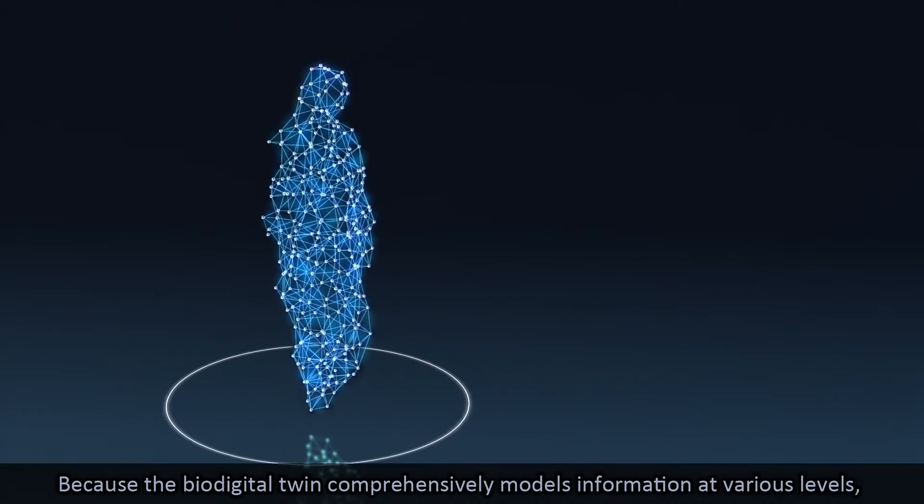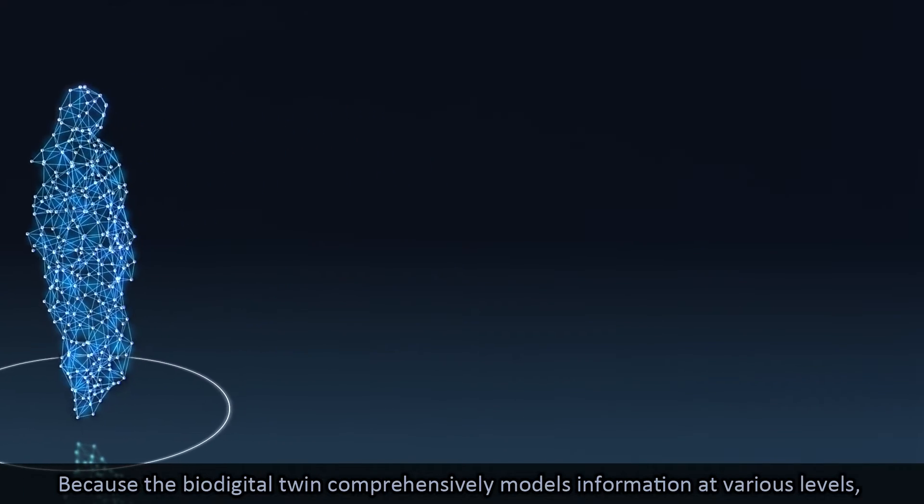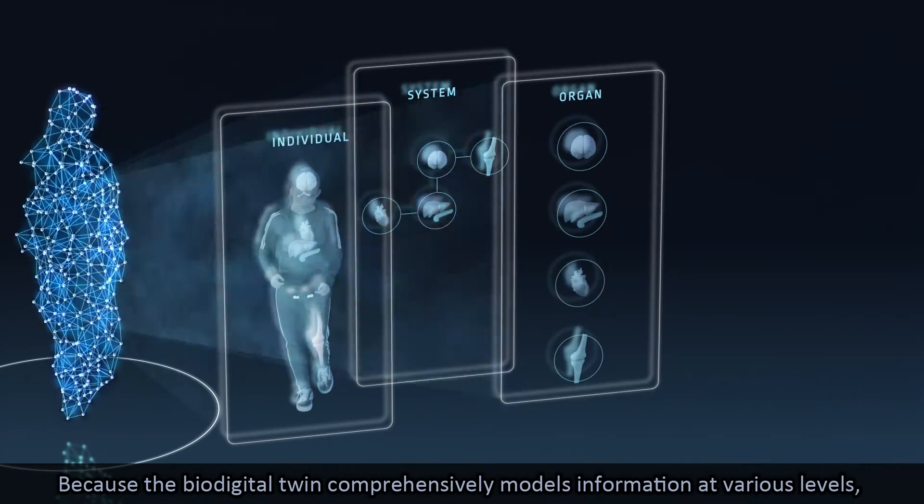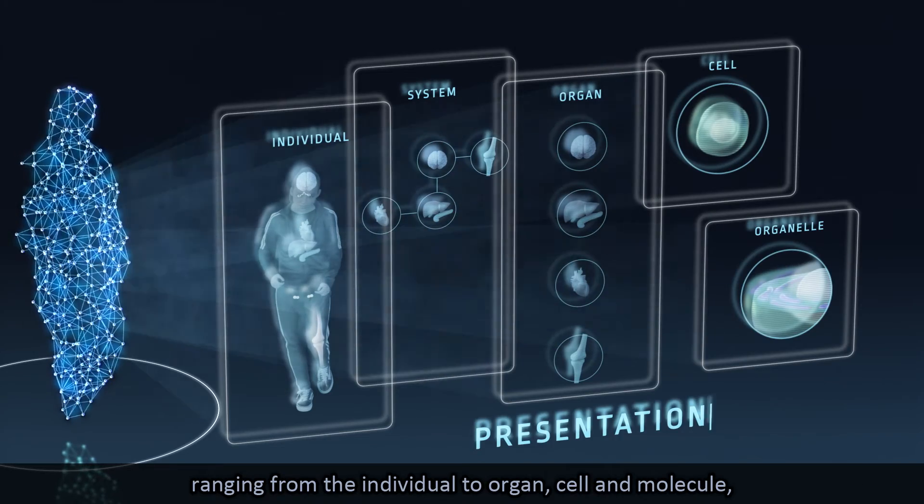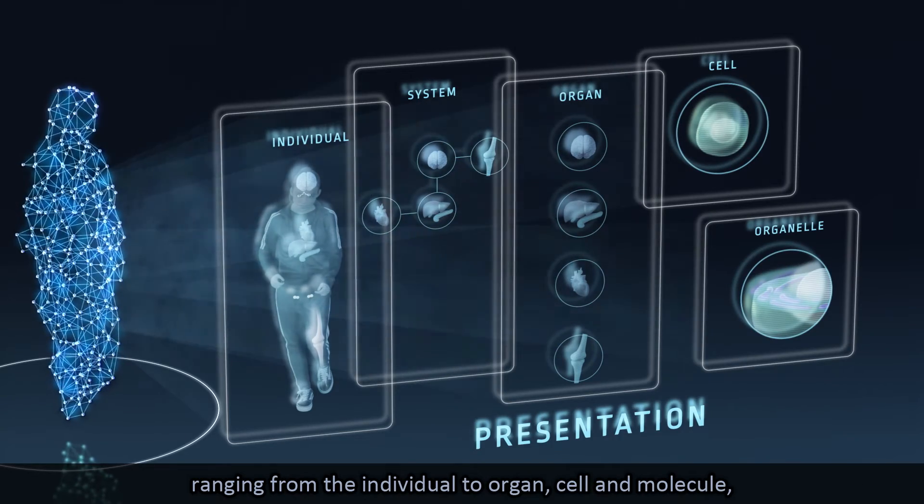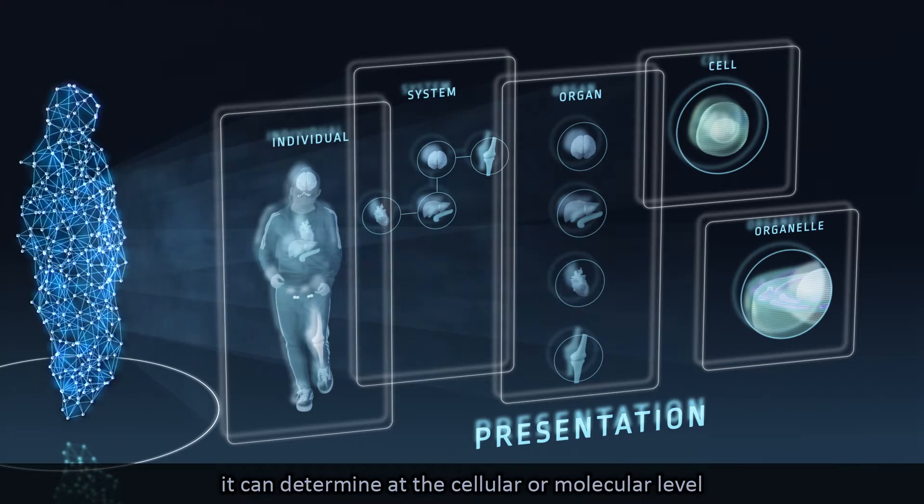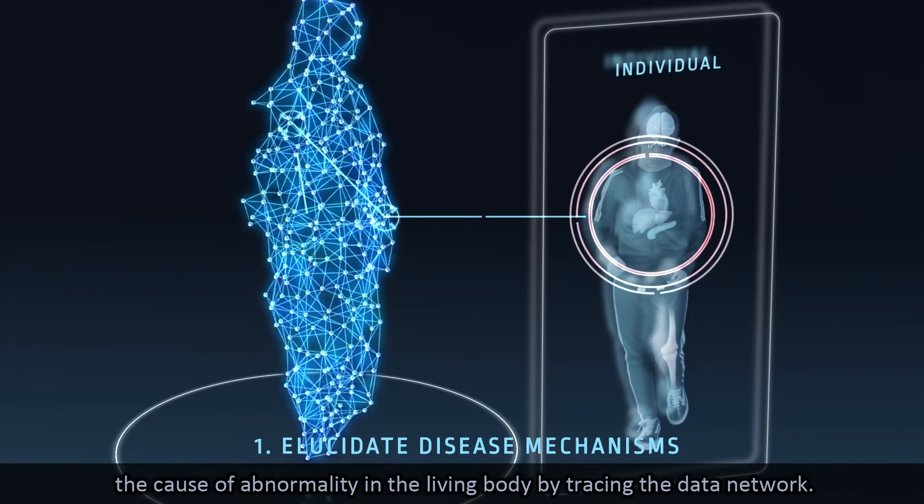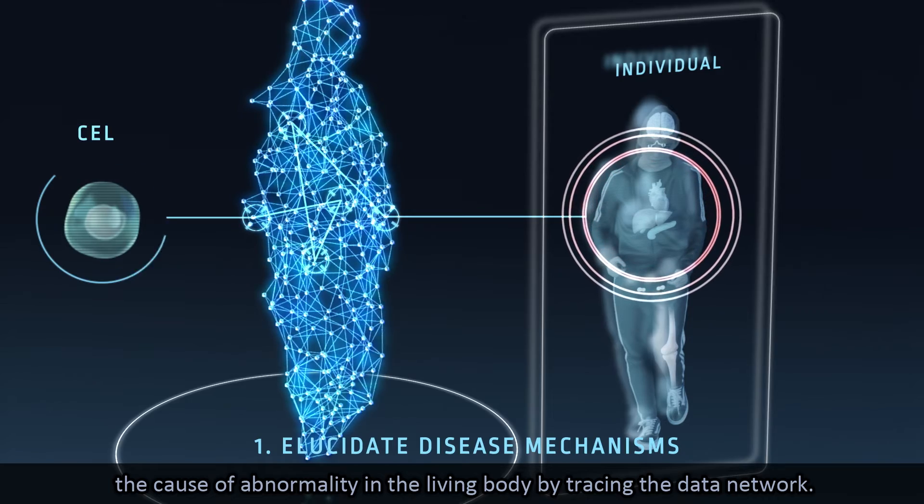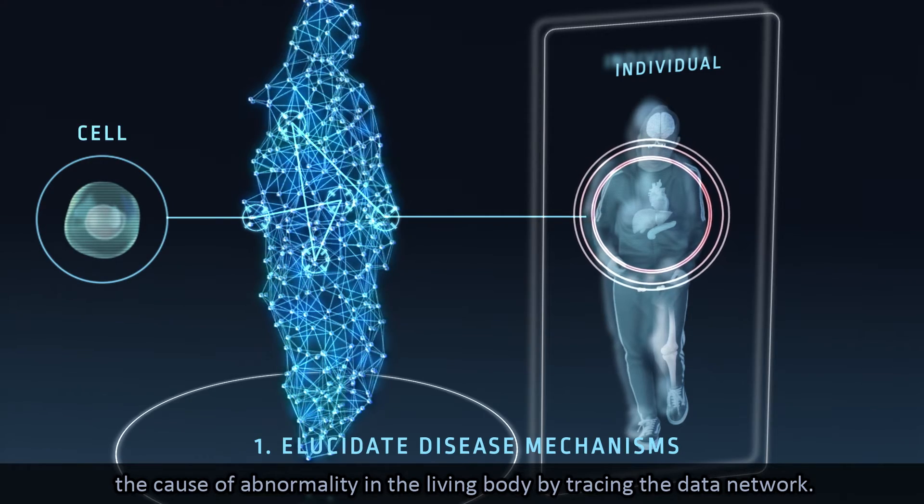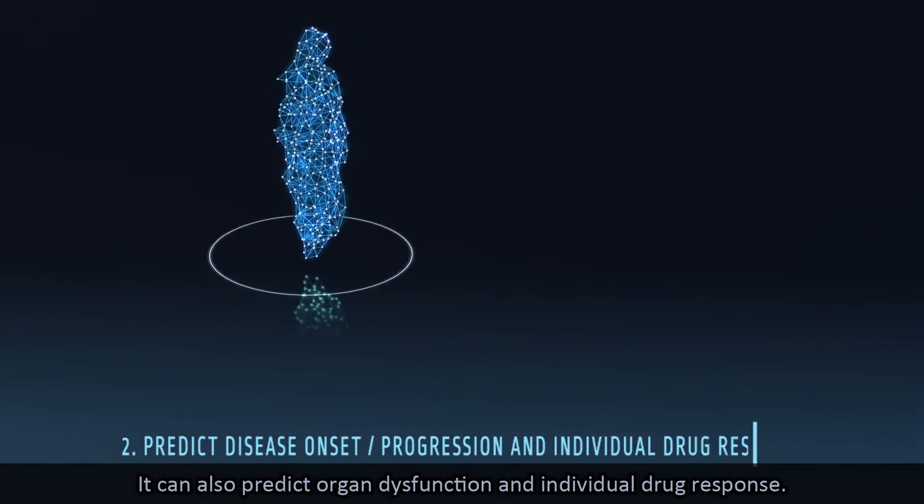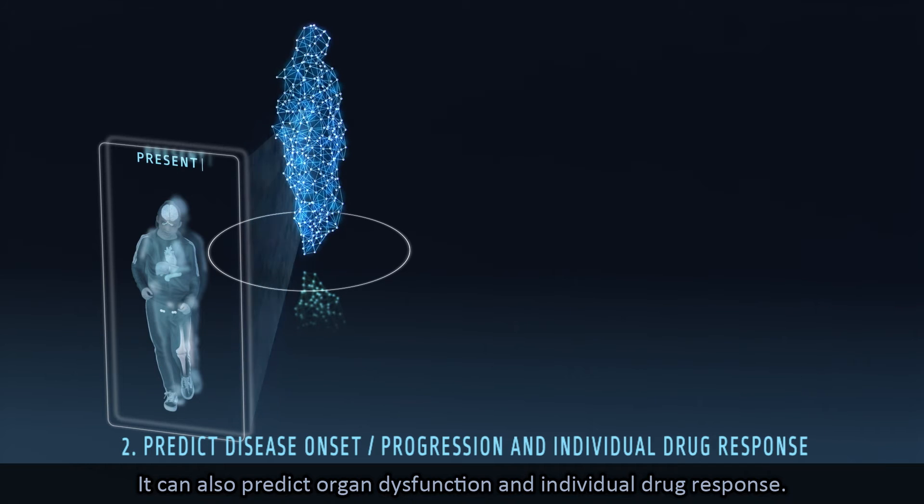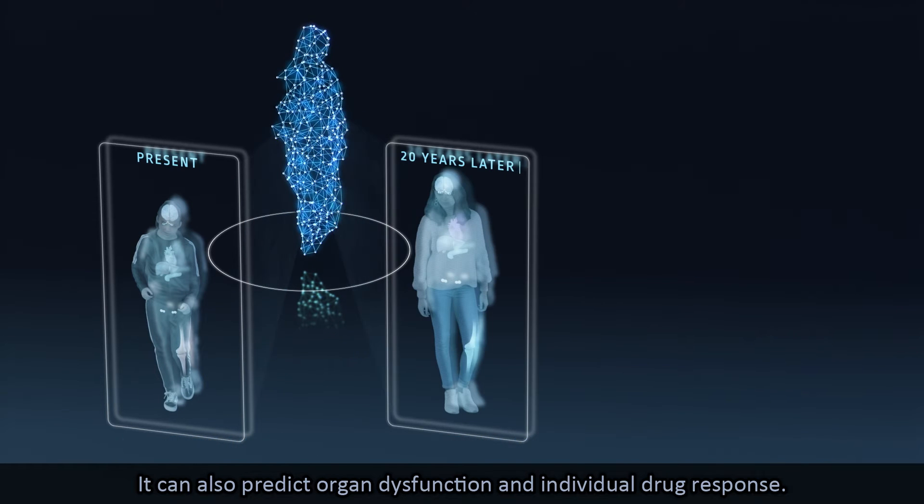Because the biodigital twin comprehensively models information at various levels, ranging from the individual to organ, cell and molecule, it can determine at the cellular or molecular level the cause of abnormality in the living body by tracing the data network. It can also predict organ dysfunction and individual drug response.